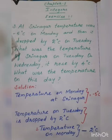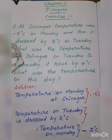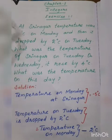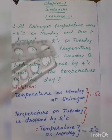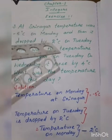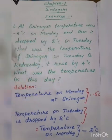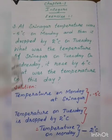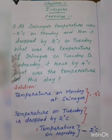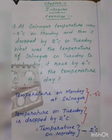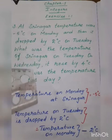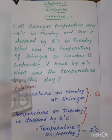On Monday, the temperature is minus 5 degrees Celsius. Dropped means it is decreased. So minus 5 and decreased by 2 degrees Celsius on Tuesday. Then it rose — rose means increased — increased by 4 degrees Celsius.